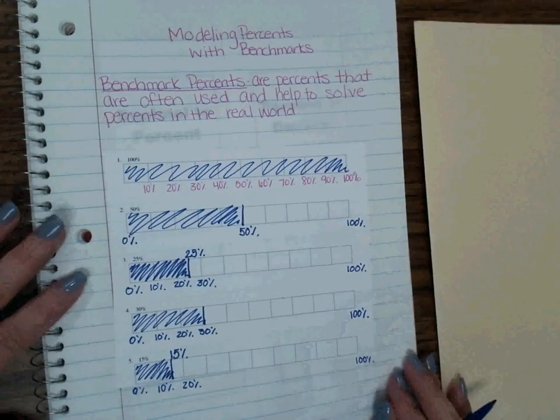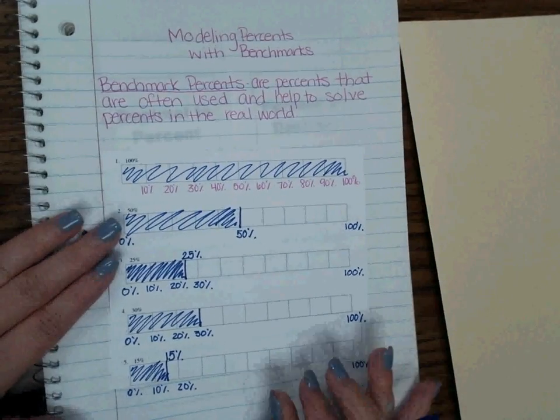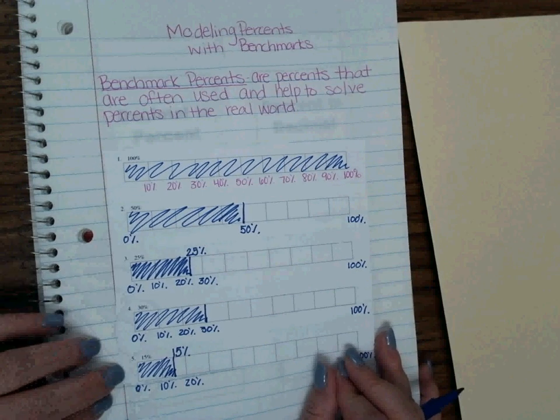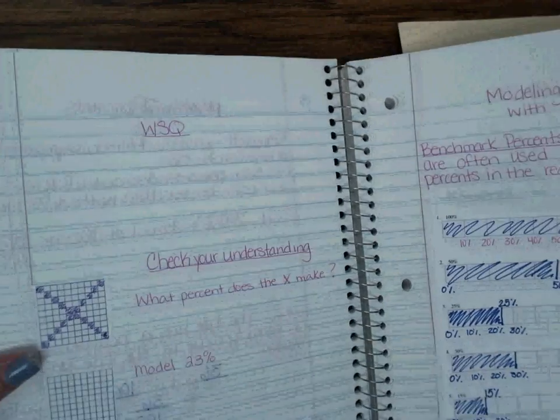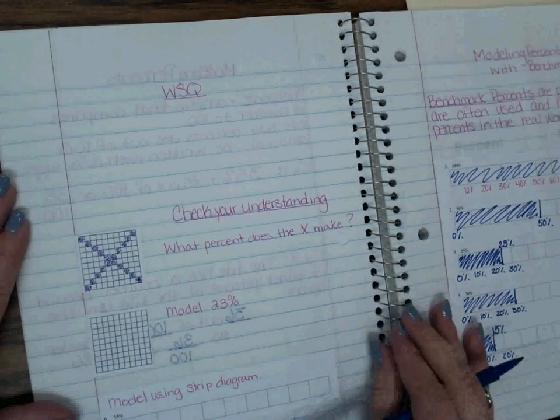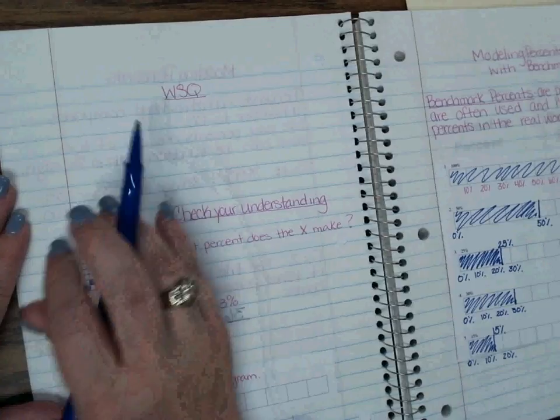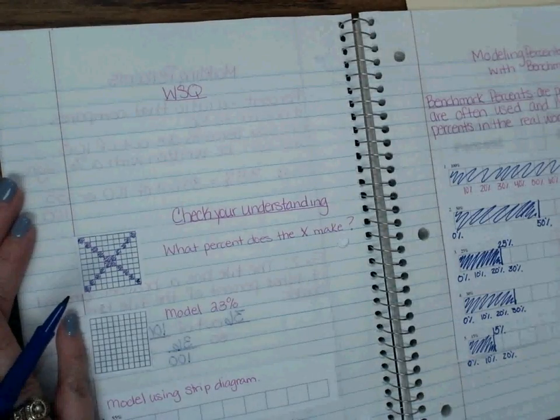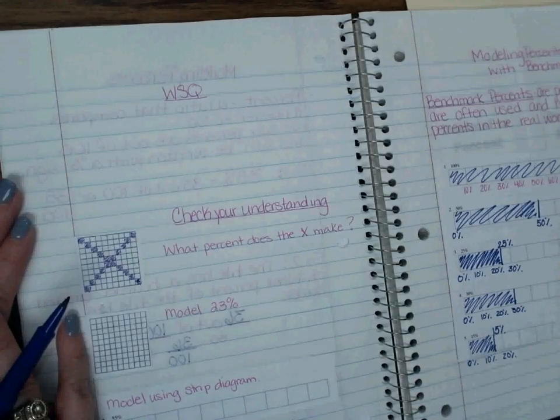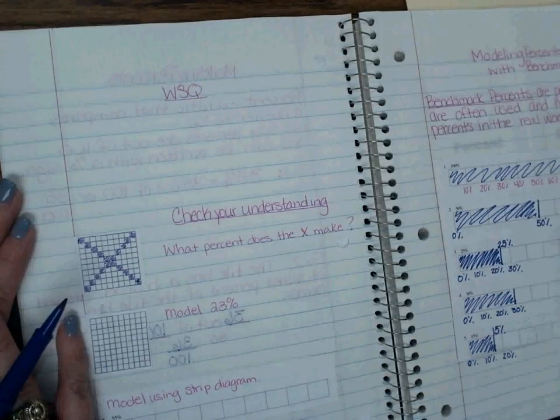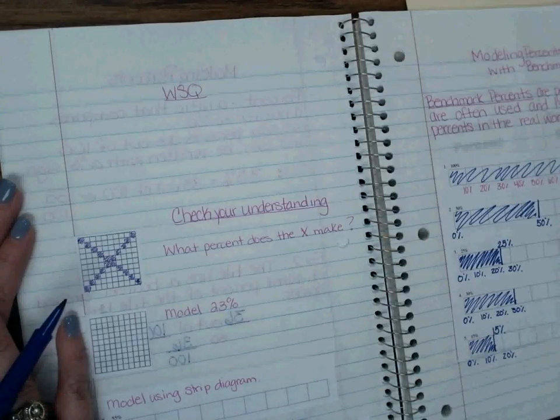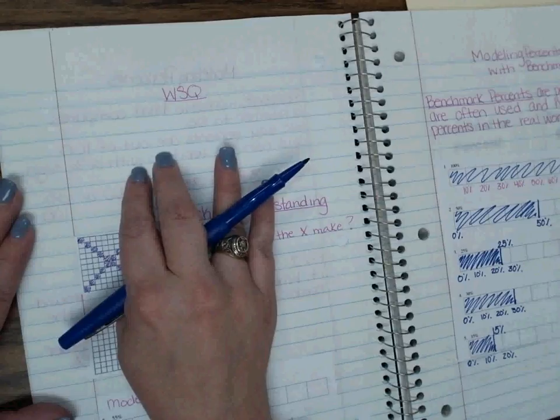Okay. So we've talked about using a 10 by 10 grid and a pie chart and benchmark percents to help us model percents. What the last thing that we're going to do with this first lesson is over on the opposite side of the page, we are going to be writing our WISC. Remember, that is a summary statement. You are either going to be writing a statement that's in a complete sentence about what we learned in the lesson, or you're going to ask a question. Now that question can be, I don't understand something and I need clarification, or it could be formatted like a question that you would have on a quiz, like a question that I might ask you.